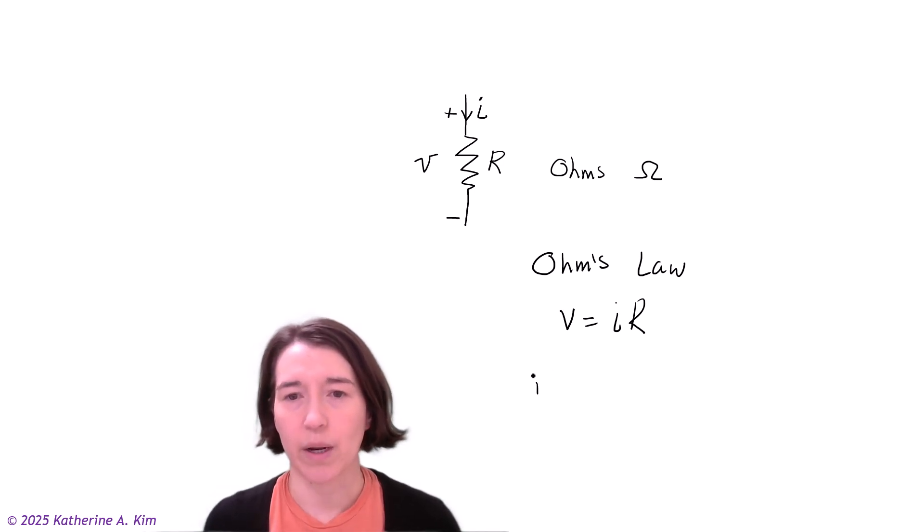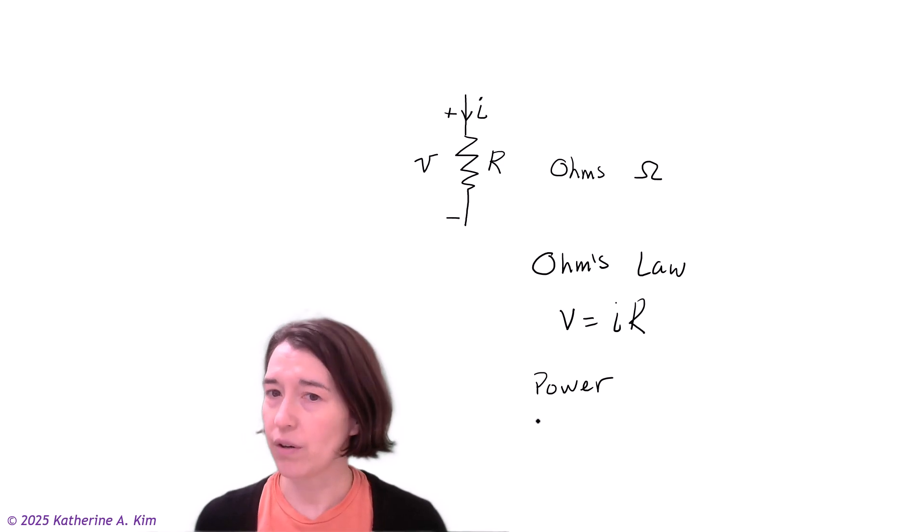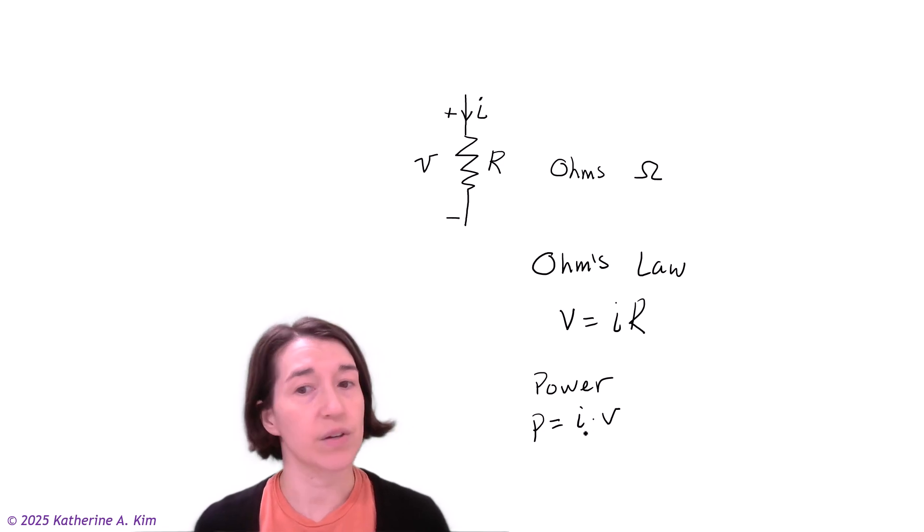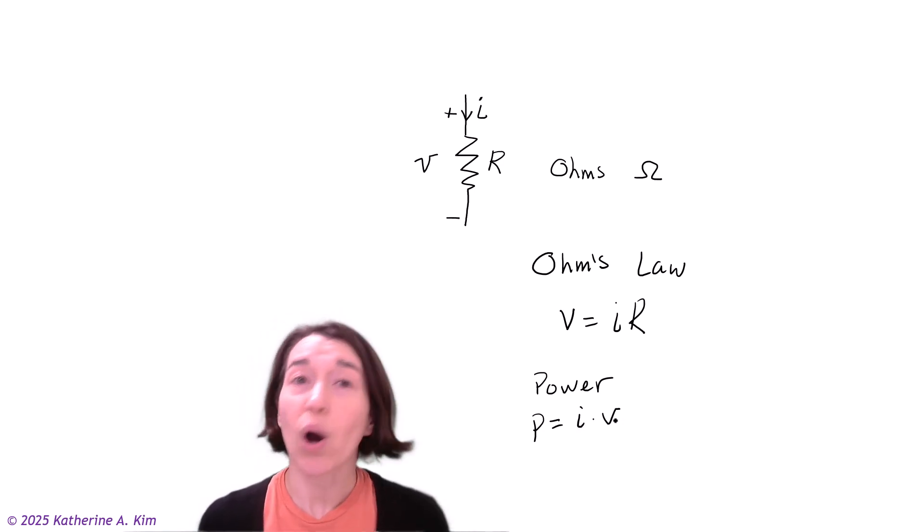Next we need to know about power. Remember, P equals IV—the current and voltage of the resistor. Because we can apply Ohm's law directly, we can put this into a form with the resistance.